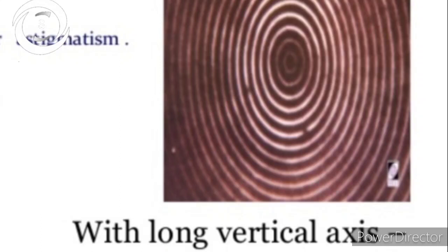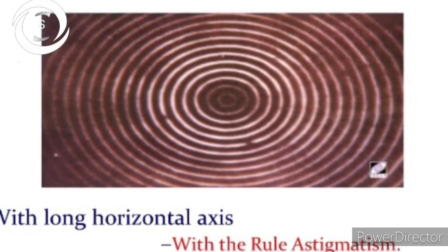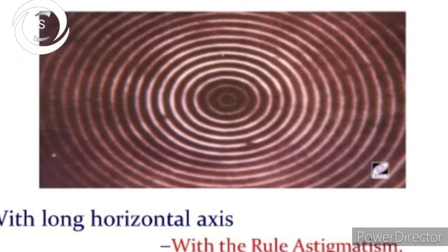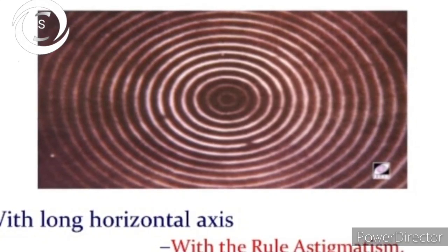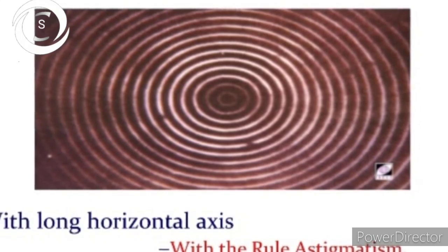That means steeper horizontal meridian or against the rule astigmatism. Long horizontal axis means widely spaced horizontal meridian mires and narrow spaced vertical meridian mires. So that's with the rule astigmatism.